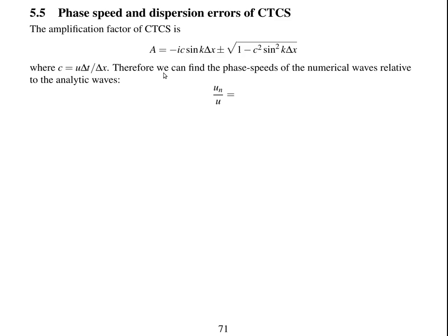Therefore, knowing both of these and knowing what we found out on the previous slide, we can work out the phase speed of the numerical waves relative to the analytical waves. So un is the speed of the numerical waves divided by the speed of the analytical waves.